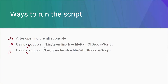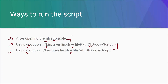We can do this practically using the gremlin.sh script by providing a hyphen-e option to it, and after that providing the path of the Groovy script that we need to run. The same way we can use the hyphen-i option also. We'll be seeing the difference between hyphen-e and hyphen-i when we run the script practically. Let's move ahead and try all these options one by one.